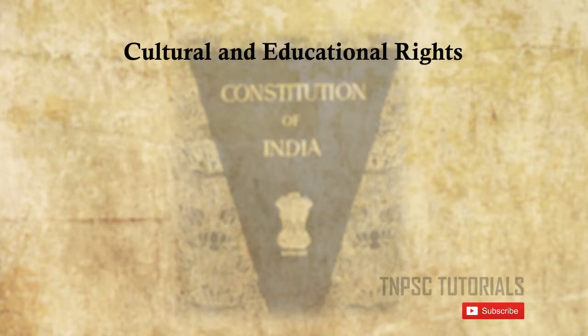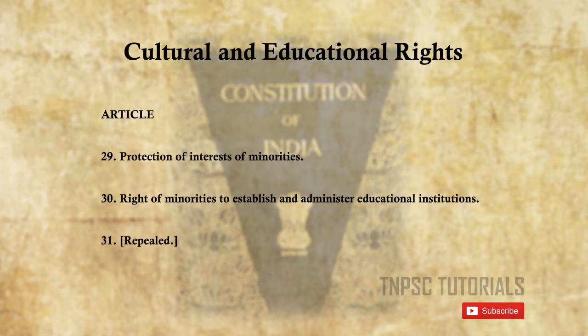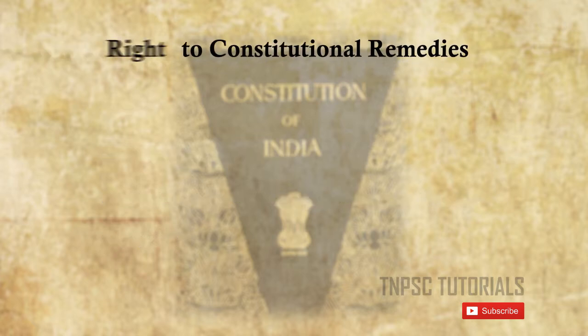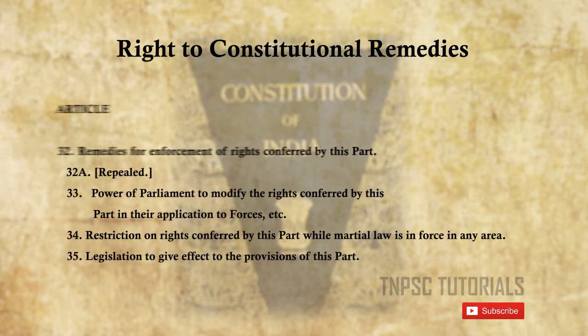Cultural and Educational Rights cover Articles 29 and 30. Article 29 provides protection of language, script, and culture of minorities. Article 30 gives the right of minorities to establish and administer educational institutions.